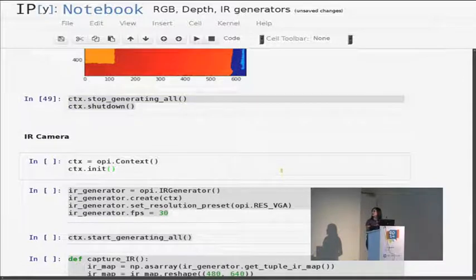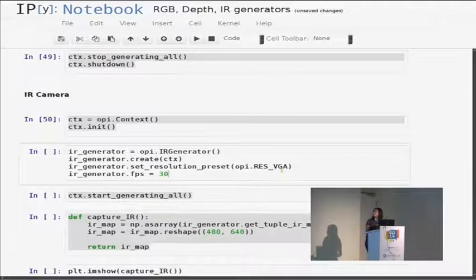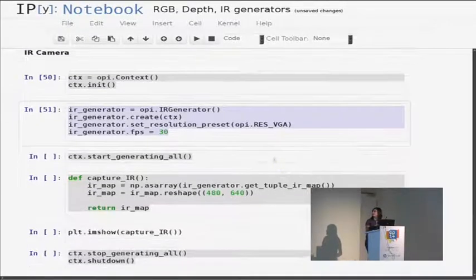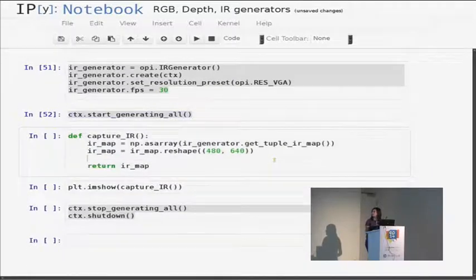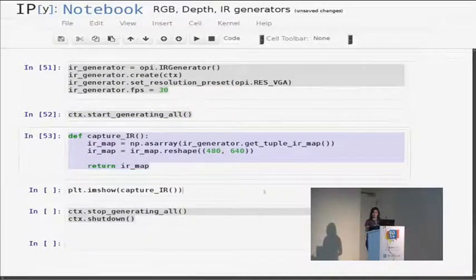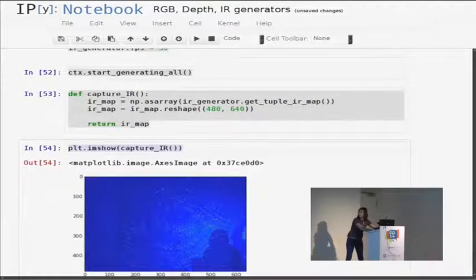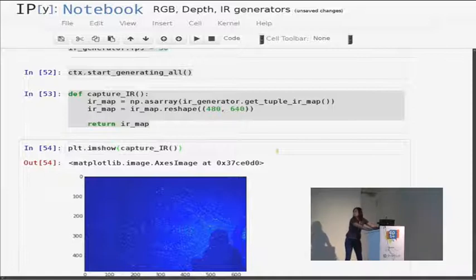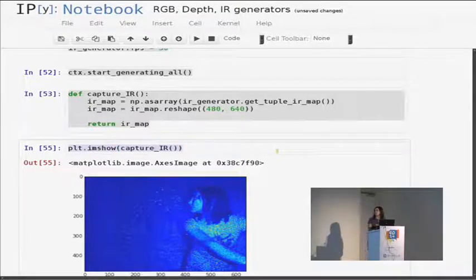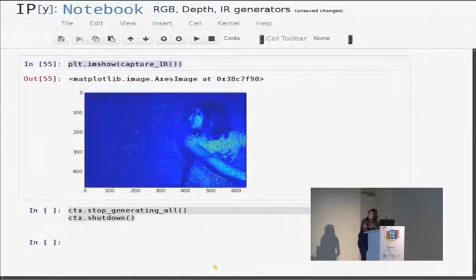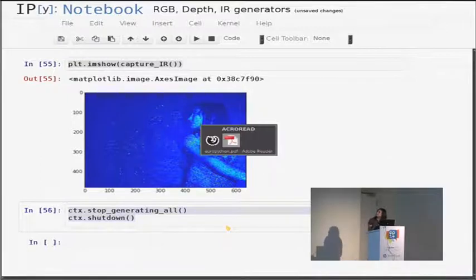The infrared camera we do the same exactly the same just an infrared camera generator. We start the context. Same function. And then you get some predator vision especially. When you finish you have to stop your context.